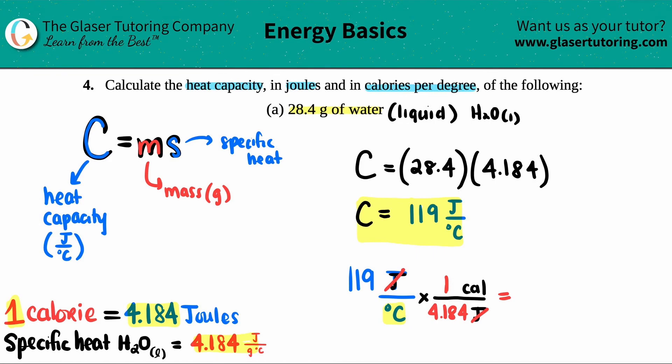119 divided by 4.184, keeping with the three sig figs, gives us 28.4 calories per degree Celsius. That is your second answer. They are the same numbers but just different units, so they are equivalent to each other.